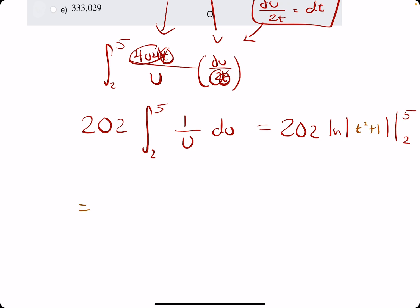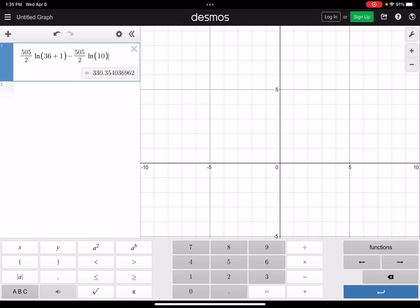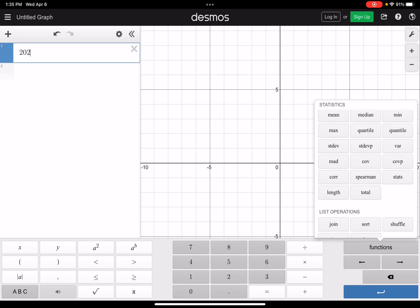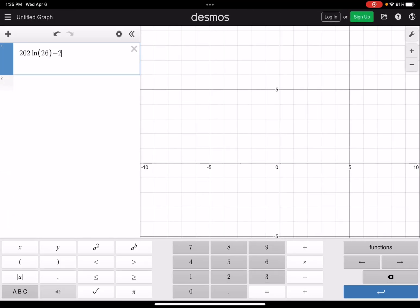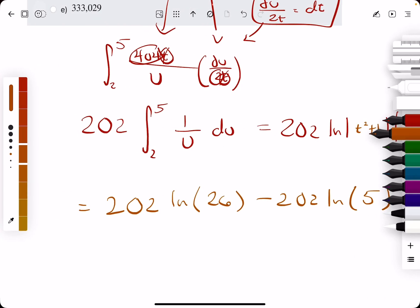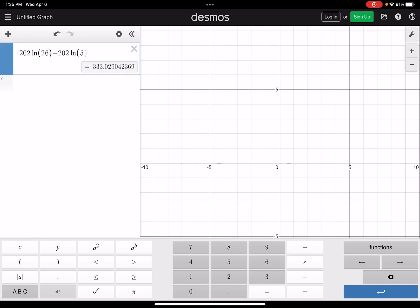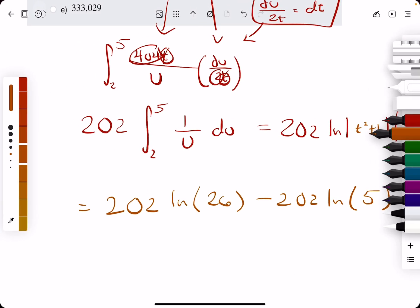All right. Now, this is equivalent to 202 ln of 25 plus 1. So 5 squared plus 1. So 26. And then we're subtracting the 2 evaluation, which is 4 plus 1. So 2 squared plus 1 is 5. Let's get back to Desmos and do this right. So 202, natural log of 26 minus 202, natural log, I already forgot it, 5, natural log of 5, 333.029.